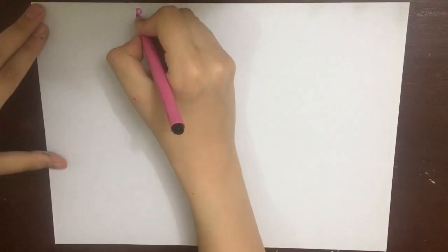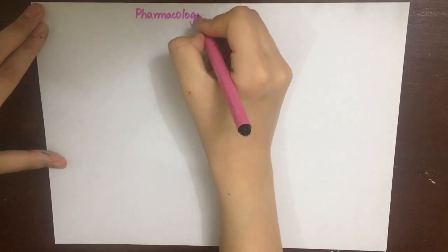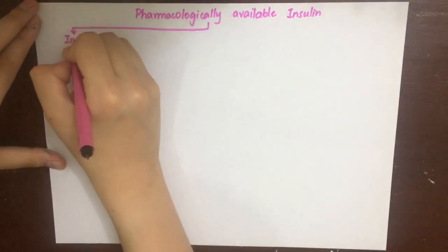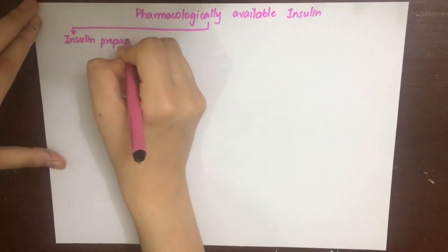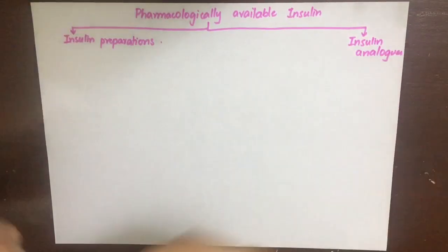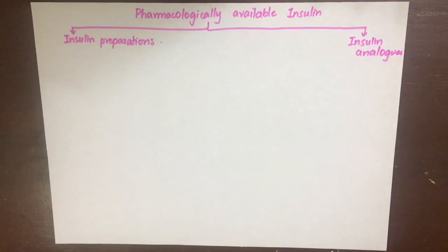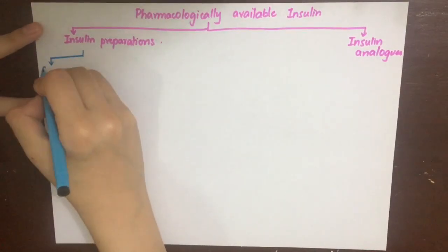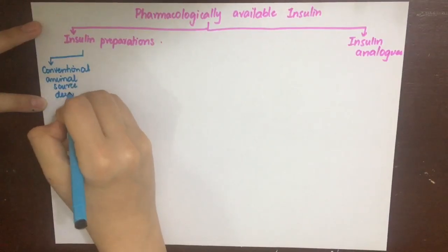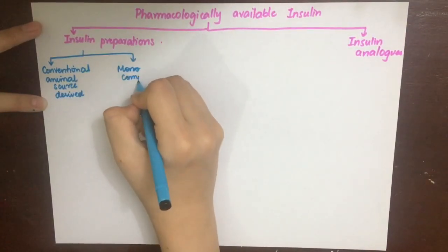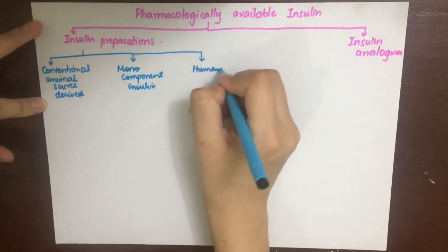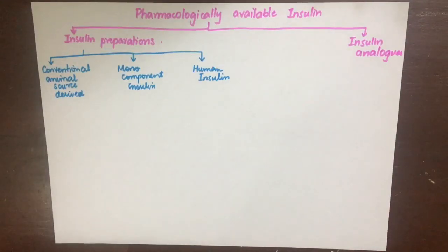There are two main categories of pharmacologically available insulin. First are insulin preparations — either derived from animal sources or from recombinant DNA technology — that have the same structure and amino acid sequence as human insulin. The second category is insulin analogues, which are slightly different from human insulin. Insulin preparations include conventionally derived animal-source insulin, monocomponent insulin which are purified forms, and human insulin.